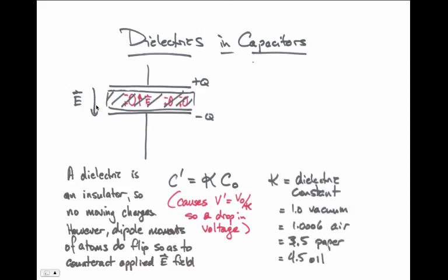This constant kappa is called the dielectric constant for the particular material that we're inserting. Kappa is equal to 1 for pure vacuum. It's almost 1 for air, about 1.0006, because air does not tend to cancel the electric field applied. However, kappa can be a very large number, like 3.5 for something like paper, or 4.5 for oil.